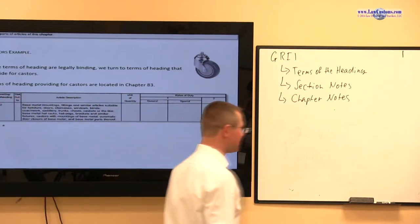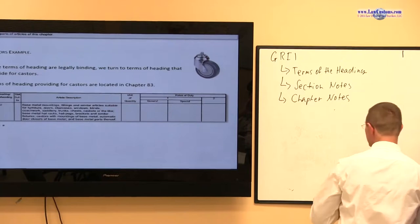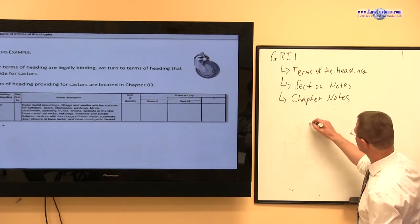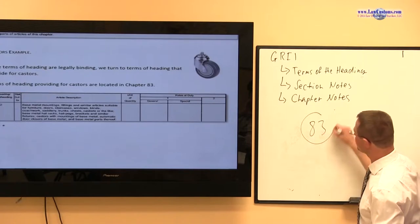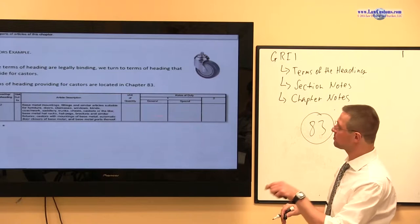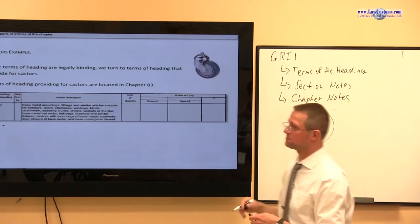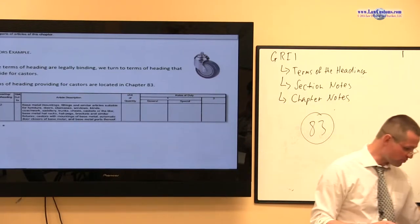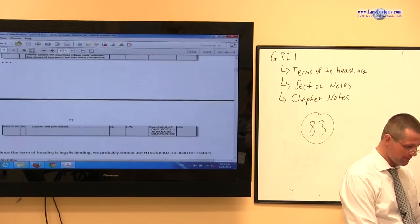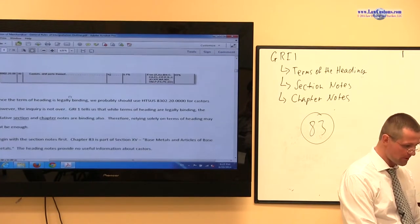So, okay, very well. So, customs examiners, you're looking at the terms of the heading, which is legally binding, and you find out, okay, 83 fits the bill, because terms of the heading provide for casters. Yes. Wonderful. Easy point, right?